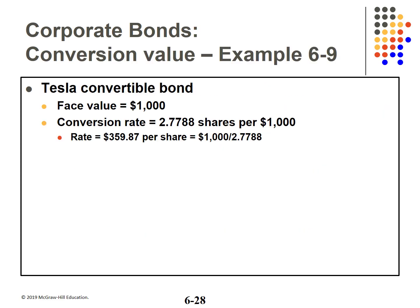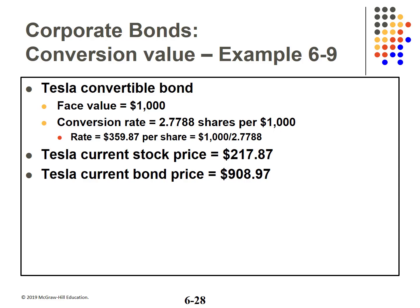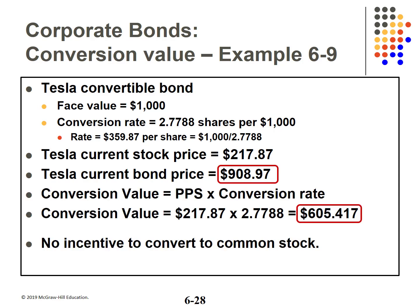Here is a convertible bond example using Tesla. Tesla's bond has a $1,000 face value and offers a conversion rate of 2.7788 shares per $1,000, equating to a rate of $359.87 per share. Tesla's stock is currently selling for $217.87 and their current bond price is $908.97. The conversion value is the price per share times the conversion rate — for Tesla, this equals $605.417. Thus, there is no incentive to convert.